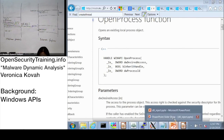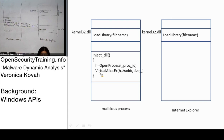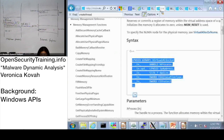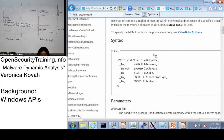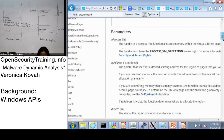Once it receives the handle, then after that it calls VirtualAllocEx using this handle. We need to look up MSDN for VirtualAllocEx. When you see VirtualAllocEx, it receives a process handle - we already have it. It also has an LP address, but it's optional. It's an input but optional. Basically, it tries to get allocated memory at a certain address in Windows, however it's not guaranteed.